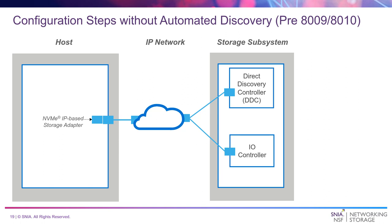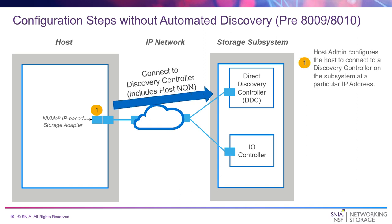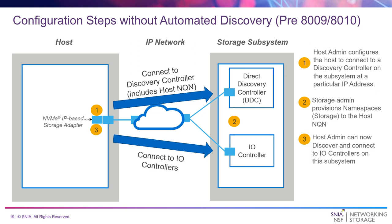Prior to the automation work, setting up a host to communicate with storage using NVMe TCP was a very manual process. The host admin would configure the host to connect to a discovery controller on the subsystem at a particular IP address. Once that's done, the storage admin could provision namespaces to that host NQN. The storage admin could have pre-provisioned by manually entering the host NQN, but that process is very error-prone. You then get to repeat those steps on every host for each subsystem.